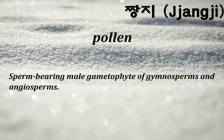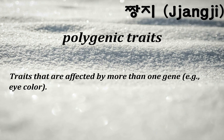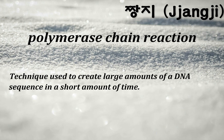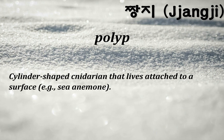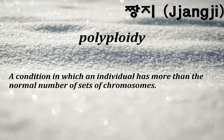Pollen: sperm-bearing male gametophyte of gymnosperms and angiosperms. Polygenic traits: traits that are affected by more than one gene, e.g., eye color. Polymerase chain reaction: a technique used to create large amounts of a DNA sequence in a short amount of time. Polyp: a cylinder-shaped cnidarian that lives attached to a surface, e.g., sea anemone. Polyploidy: a condition in which an individual has more than the normal number of sets of chromosomes.